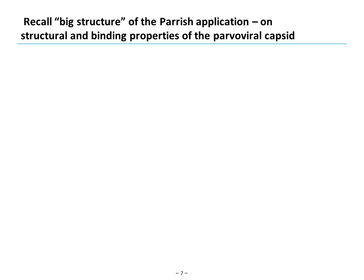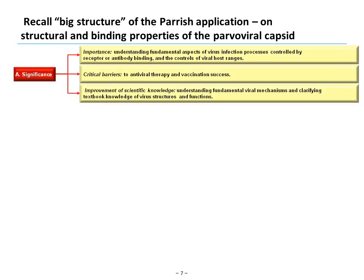The Parrish application was about the structural and binding properties of the feline and canine parvoviral capsid. In his significance discussion, he was very general about the importance, the critical barriers, and the improvement to scientific knowledge — all about understanding fundamental aspects of these biological processes and structures. The more you understand how viruses bind to cells, the more you can address critical barriers in antiviral therapy and vaccination success. The improvement in knowledge was fundamental: deeper understanding of viral mechanisms, structures, and functions.